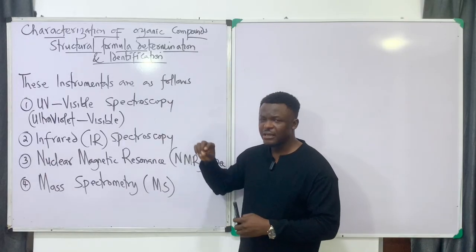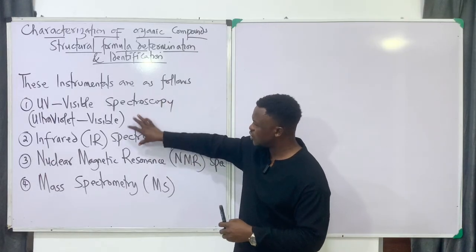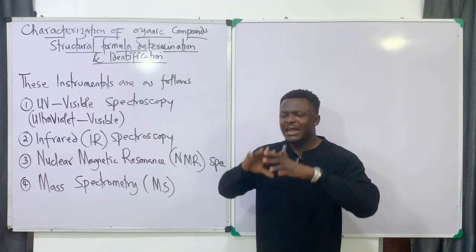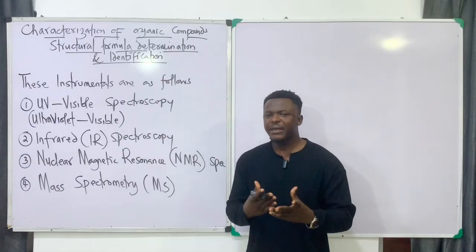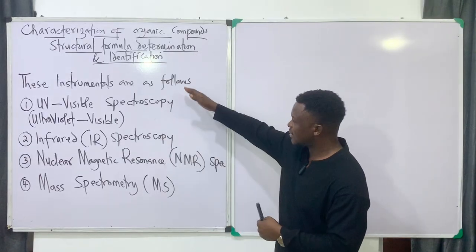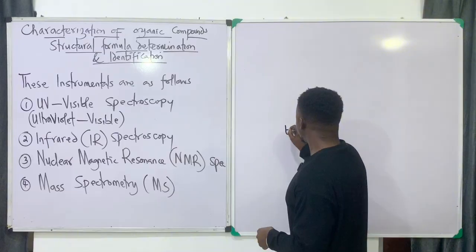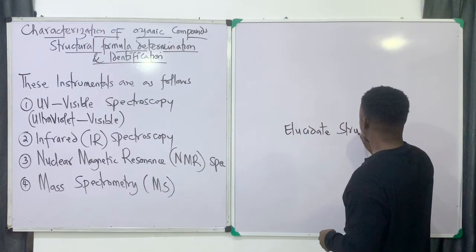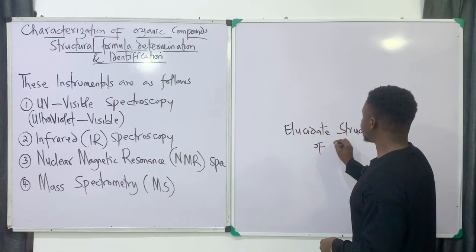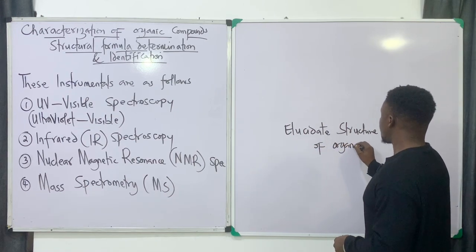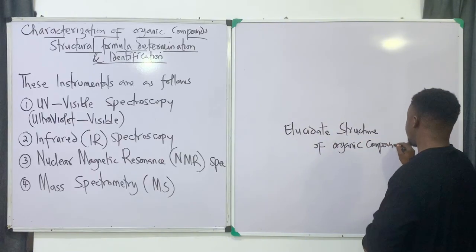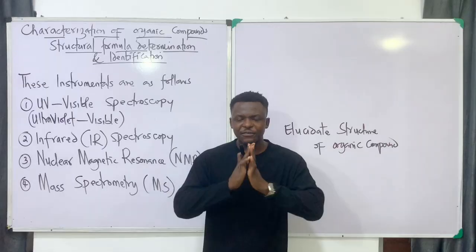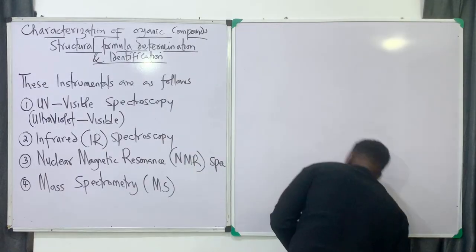We're going to look at how each of these methods plays a role in getting the structure of a compound. Chemists would say these instrumental methods helped us to elucidate the structure of organic compounds. Elucidate simply means putting together to get a full compound structure.